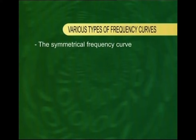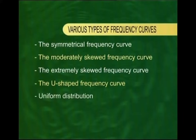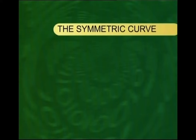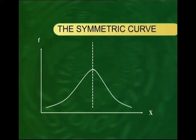I will now discuss the various types of frequency curves we encounter in practice. We have the symmetrical frequency curve, the moderately skewed frequency distribution, the U-shaped frequency curve, and the uniform distribution. The symmetric frequency distribution is of the shape you now see on the screen — if you place a vertical line in the center, the left-hand side will be the mirror image of the right-hand side. This is what is known as the symmetric frequency curve.